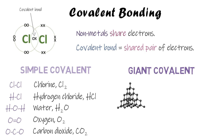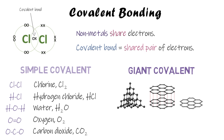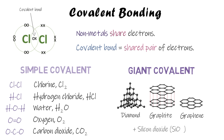Giant covalent is when you've got many thousands of atoms joined together. Three examples are the allotropes of carbon: diamond, graphite, and graphene — instead of just a few carbon atoms, you've got hundreds or thousands joined in a giant structure. The one other example you need to know is silicon dioxide. If it's covalent and not one of those four examples, you can assume it's a simple covalent compound.